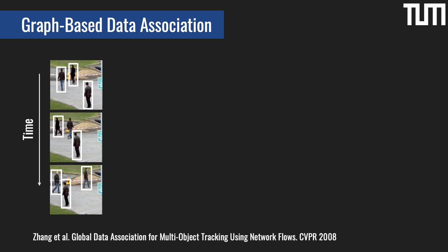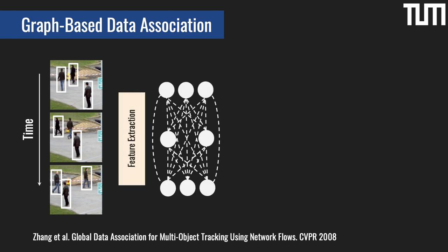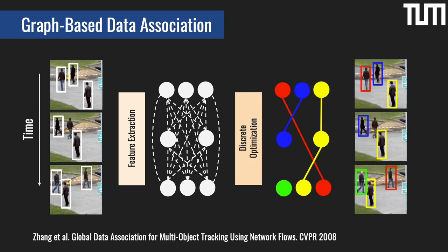This is often done within a two-step pipeline. First, several sources of features such as appearance and motion are combined in order to define a set of costs over edges. Then, these costs are used within an optimization framework to select the final edges belonging to trajectories. This two-step approach has several limitations.